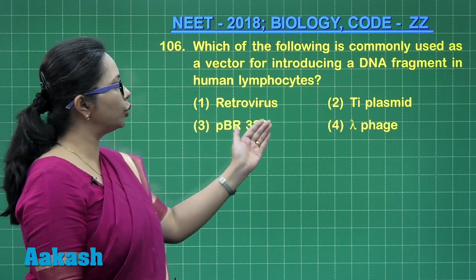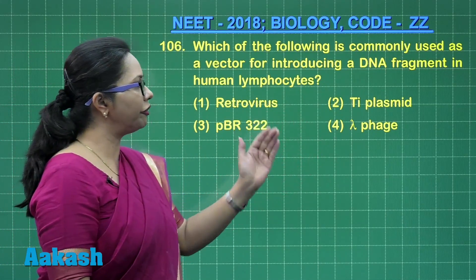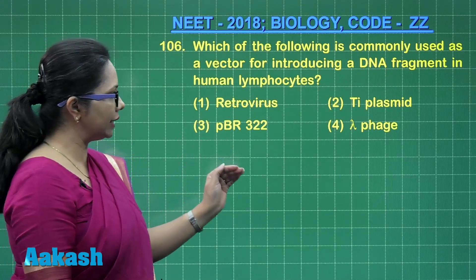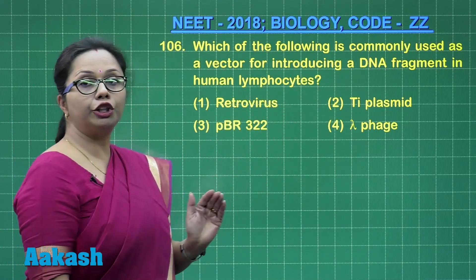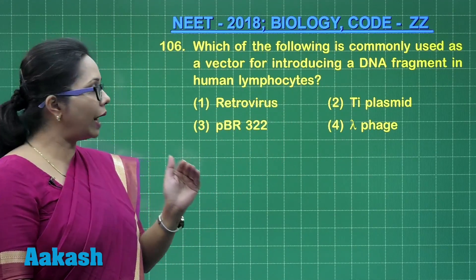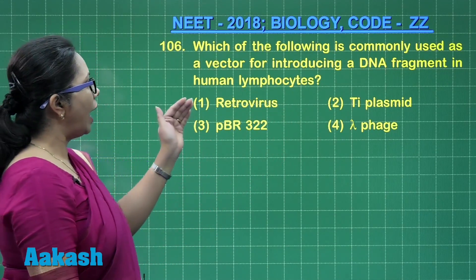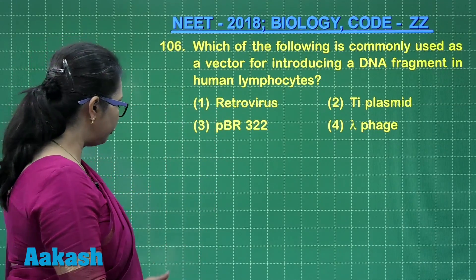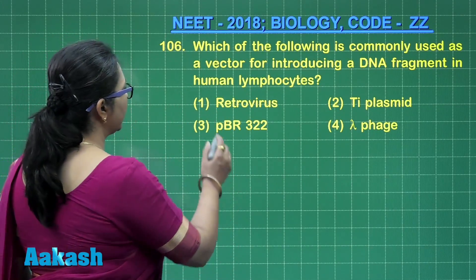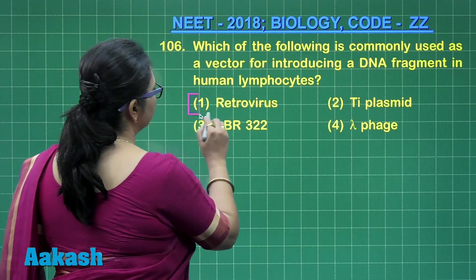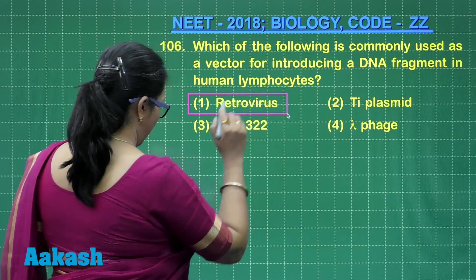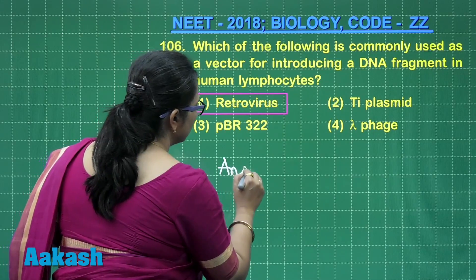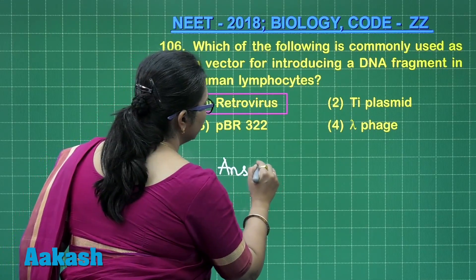Now PBR 322 and lambda phage are used to transfer DNA in a bacterial cell. Ti plasmid is used to transfer DNA in a plant cell. In the case of a human cell or human lymphocyte, we would be using retrovirus. So here our answer is option one.